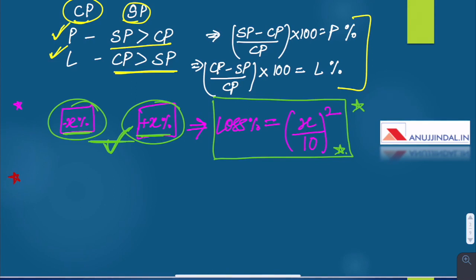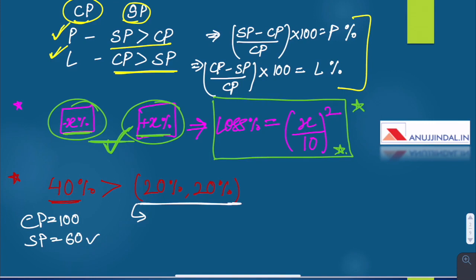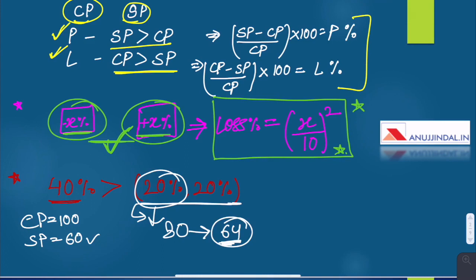Moving forward: one discount of x percent is always greater than two or more successive discounts amounting to x percent. For example, one discount of 40% will always be greater than two discounts of 20% each. If the CP is 100 rupees, after a 40% discount SP becomes 60 rupees. But with two successive discounts of 20%, the price goes from 100 to 80, then from 80 to 64. Hence one discount of x% is always greater than two or more successive discounts amounting to x%.